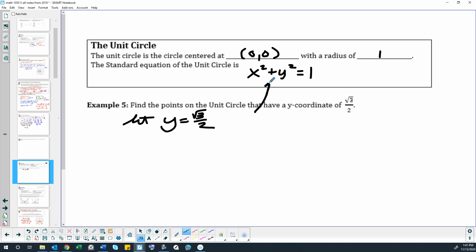And we're just going to plug that into our equation for our unit circle. So we'll have x squared plus square root of 3 over 2 squared equals 1. So our unit circle has a radius of 1.